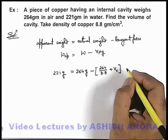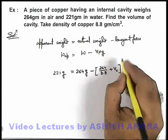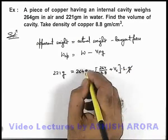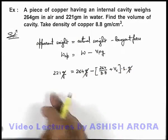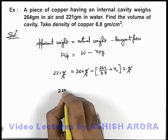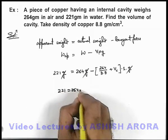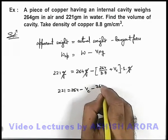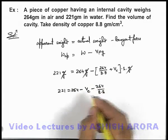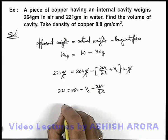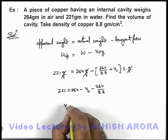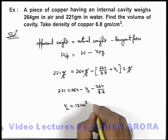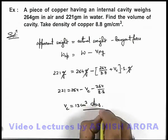Since it is submerged in water, its density we can write as 1, and g cancels out. Simplifying: 221 = 264 minus cavity volume minus 264 divided by 8.8. On simplifying, we get the volume of cavity equal to 13 centimeter cube. That is the answer to this problem.